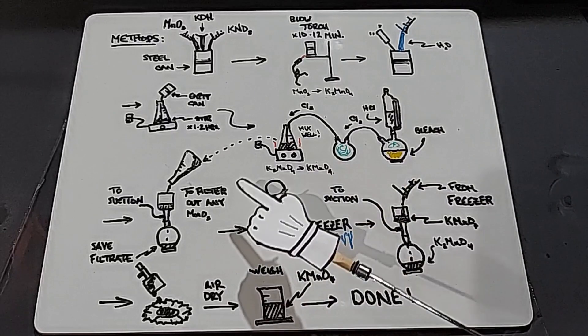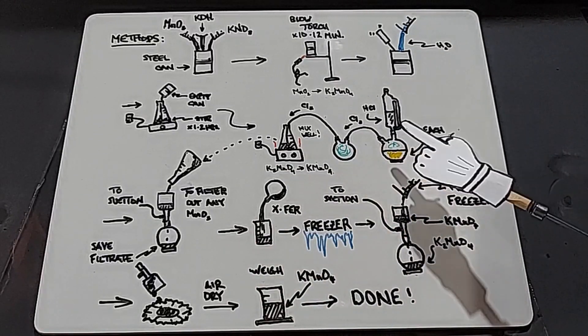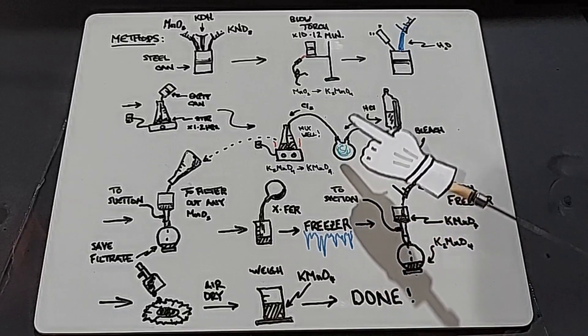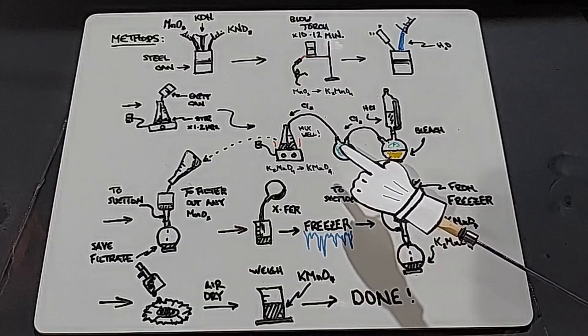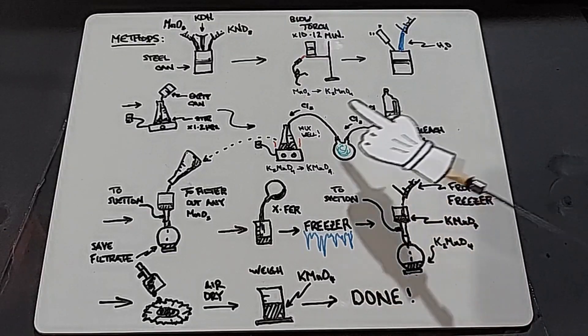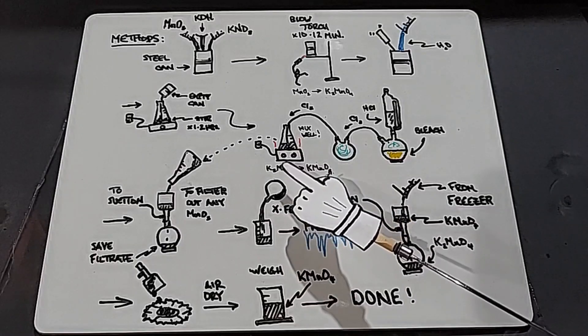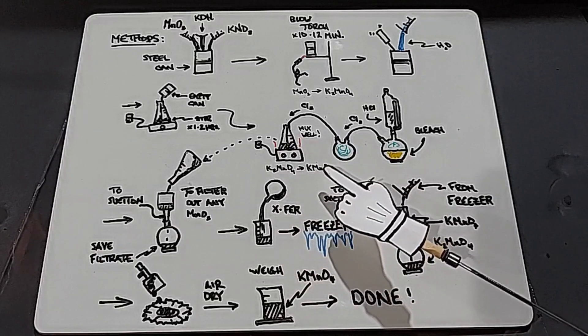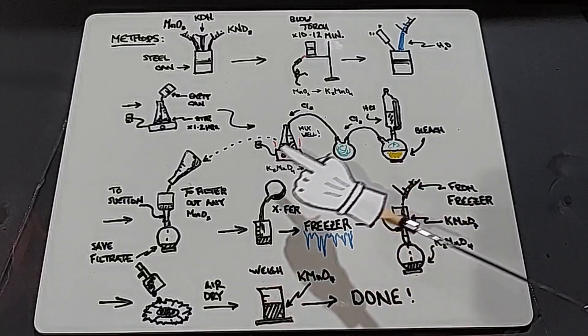Our flask of potassium manganate will get the chlorine. I'm going to have an addition funnel with hydrochloric acid and bleach down here, and a backwash saver just in case. I've done this multiple times and been saved at least once or twice. Once the chlorine gas enters the potassium manganate, it will cause it to lose that electron and become potassium permanganate.